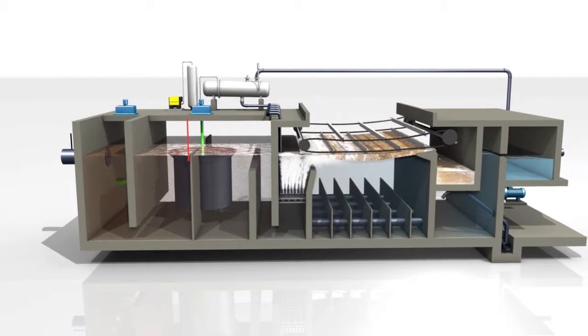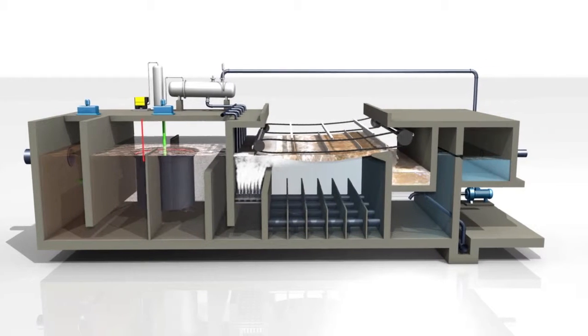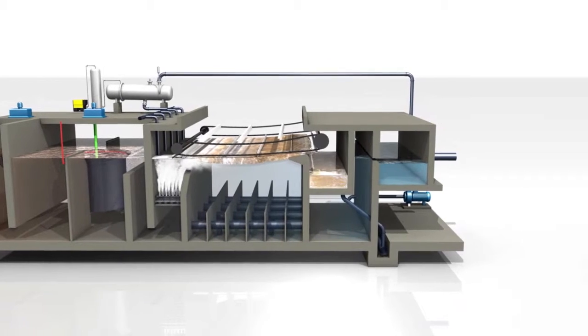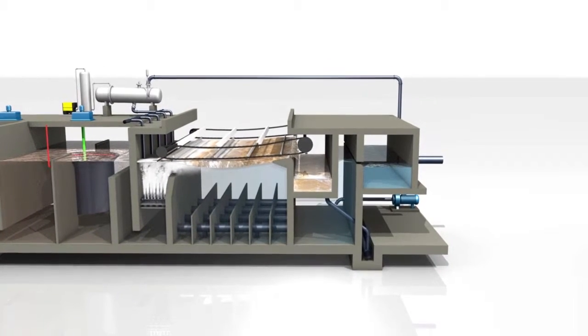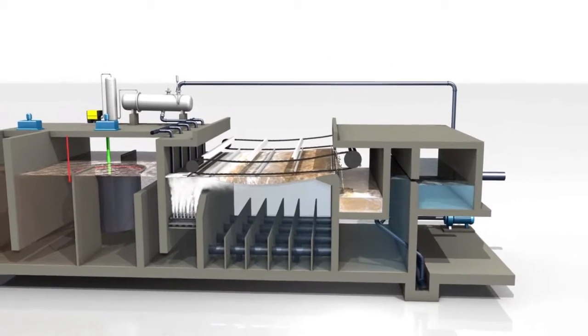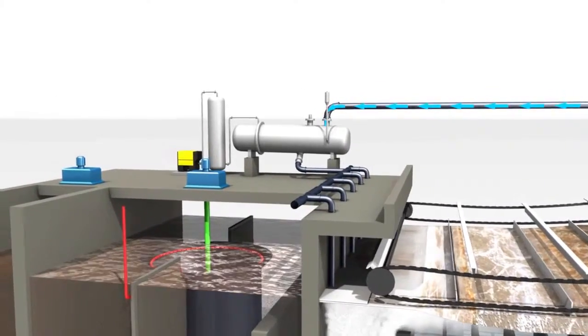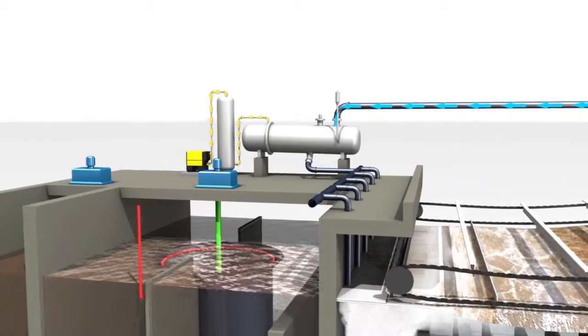The flotation unit is equipped with a flow splitting floor, a white water injection device, a surface skimming system, and flow guides located on the DAF floor to optimize hydraulic streams. White water is produced in a pressurization vessel fed both with flotated water and compressed air.